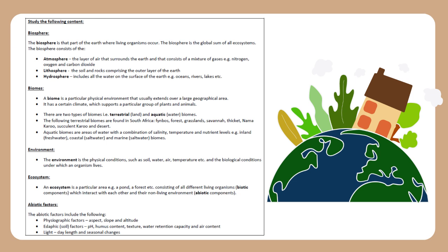Biomes: A biome is a particular physical environment that usually extends over a large geographical area. It has a certain climate which supports a particular group of plants and animals. There are two types of biomes: terrestrial (land) and aquatic (water). The following terrestrial biomes are found in South Africa: Fynbos, Forest, Grasslands, Savanna, Thicket, Nama-Karoo, Succulent Karoo, and Desert. Aquatic biomes are areas of water with a combination of salinity, temperature, and nutrient levels, e.g. inland freshwater, coastal saltwater, and marine saltwater biomes.